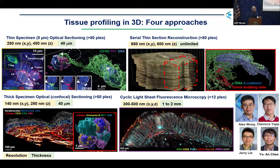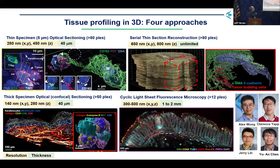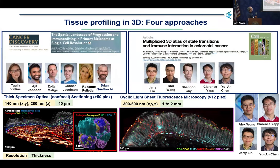We've done a series of large-scale reconstruction efforts shown here on the right with a colorectal cancer. Serial section reconstructions have become increasingly appealing and shown us how much larger most tissue structures are than we thought. Things previously considered highly localized — for example, budding in a colon tumor used as a diagnostic criterion — are actually just fingers reaching out from the tumor front, cut in cross-section. We'll talk today about recent thick section imaging and light sheet imaging down below.